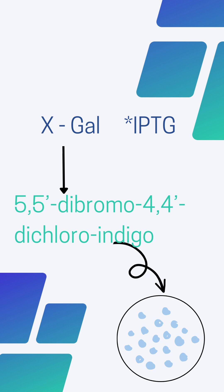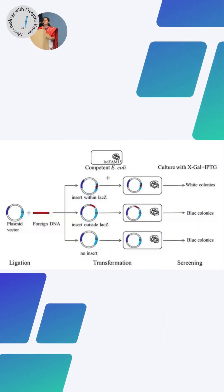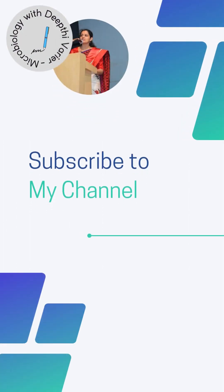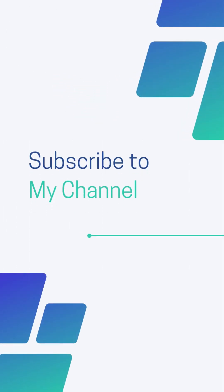Remember, IPTG is not a substrate for beta-galactosidase — it is only acting as an inducer. Ultimately, if your recombination has occurred in the correct place, you get white colored colonies, which you can pick and continue further experiments. However, if recombination has not occurred or has occurred at the wrong place, that gives you blue colored colonies. This is the simple and easy method of blue-white screening used to identify recombinants.